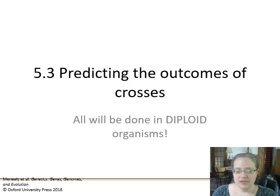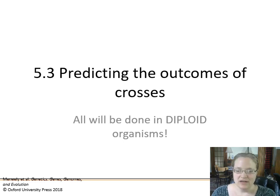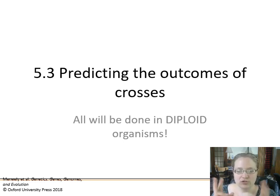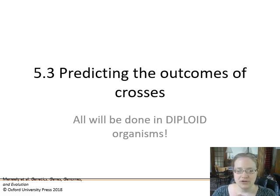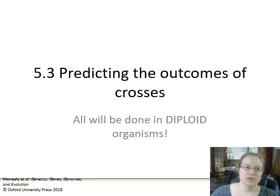Next we're going to look at how to predict the outcomes of crosses. We're going to make this prediction or expectation of what should happen if a cross occurs, and that's something we will eventually check against observable results.